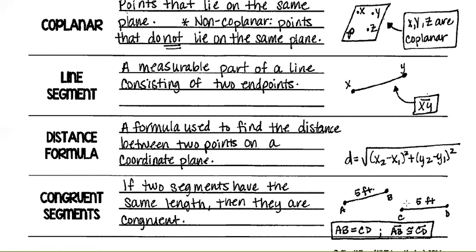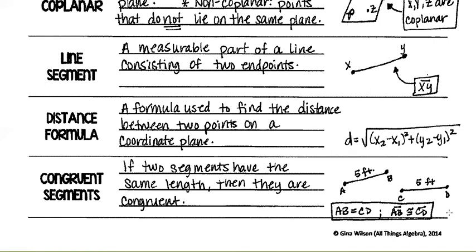Congruent segments: if two segments have the same length, then they are congruent. So if segment AB is five feet and segment CD is also five feet, then AB equals CD, and segment AB is congruent to segment CD.